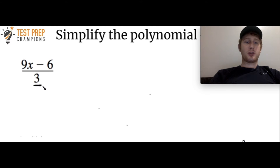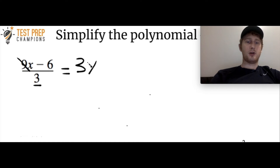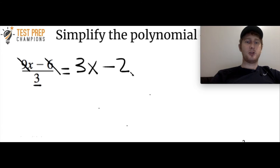We're going to start by looking at the smallest number out of all three terms. We've got 1, 2, 3 different terms. Smallest number is 3, so we're going to divide each term by 3. 9 divided by 3 is 3, and we bring that x along, so we have 3x. 6 divided by 3 is 2, so we bring the minus along — that's 3x minus 2. And 3 divided by 3 is just 1, and there's no sense writing the 1 down here. So the answer is simply 3x minus 2.